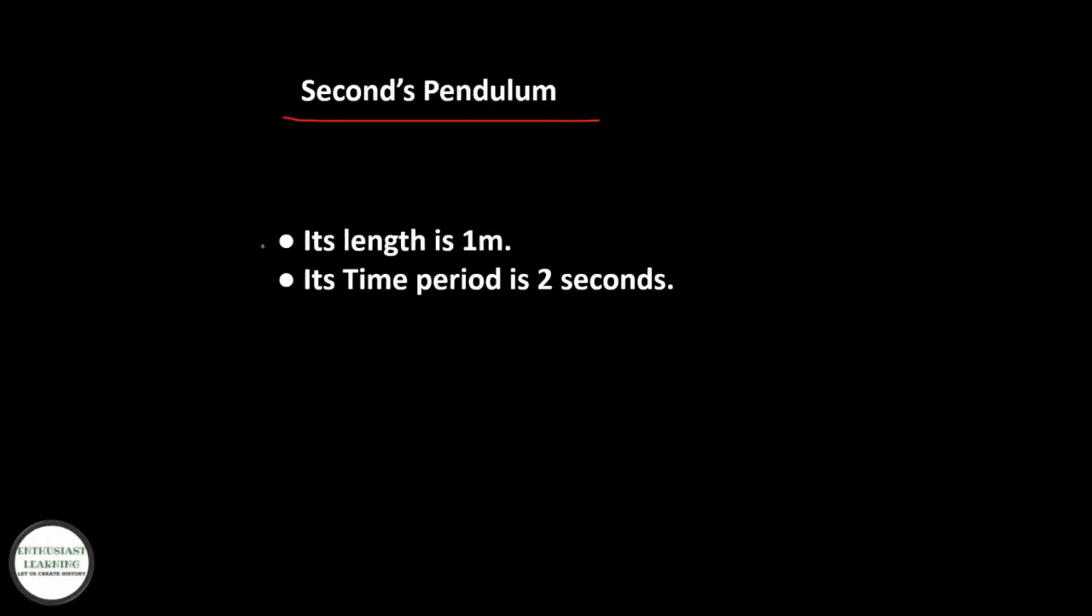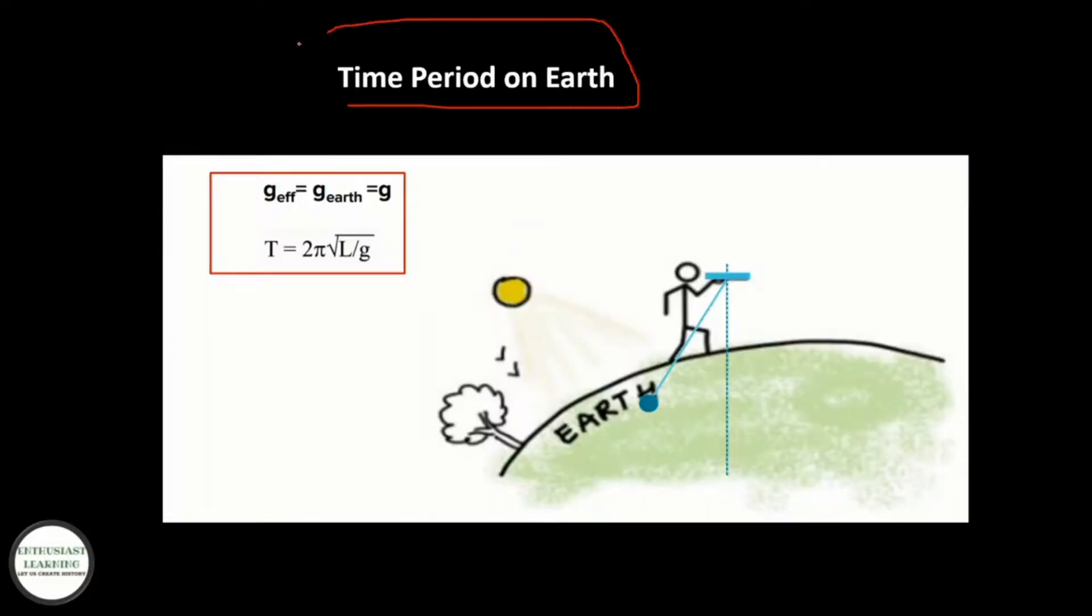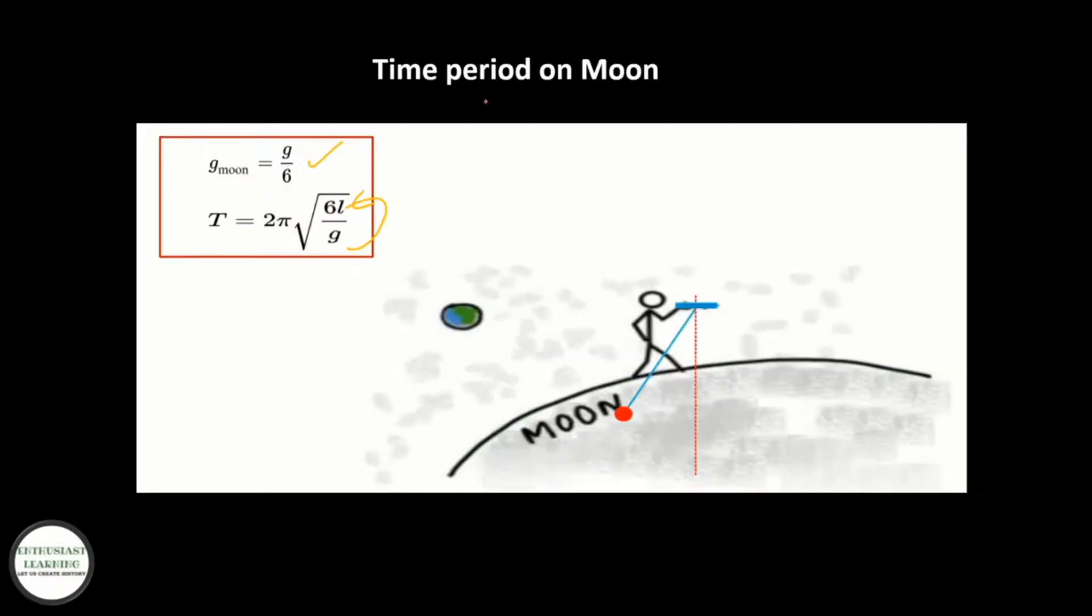Second pendulum: length is one meter and the time period is two seconds. Time period on Earth: T = 2π√(L/g). Time period on Moon: T = 2π√(6L/g). On space: T = ∞.